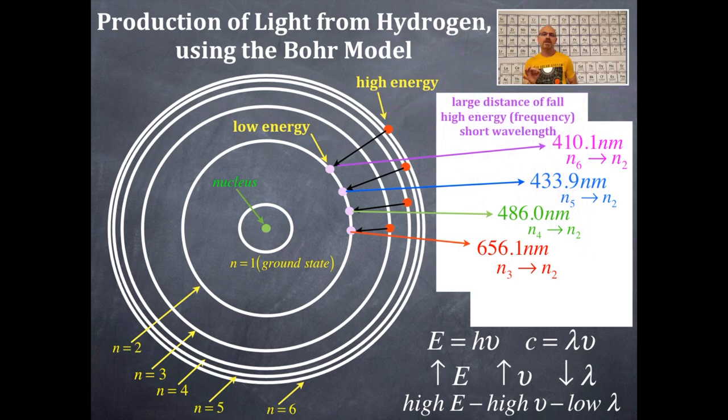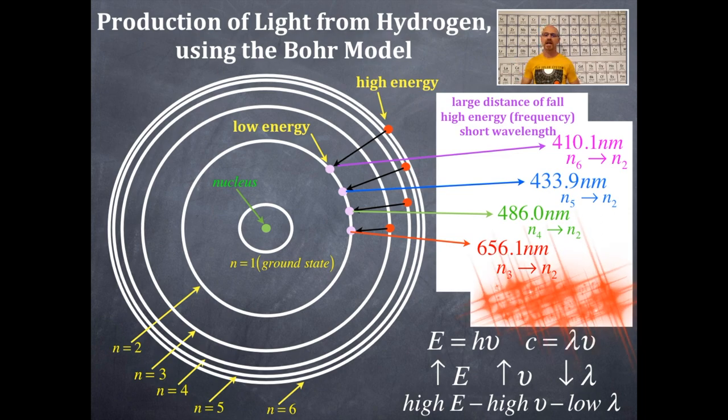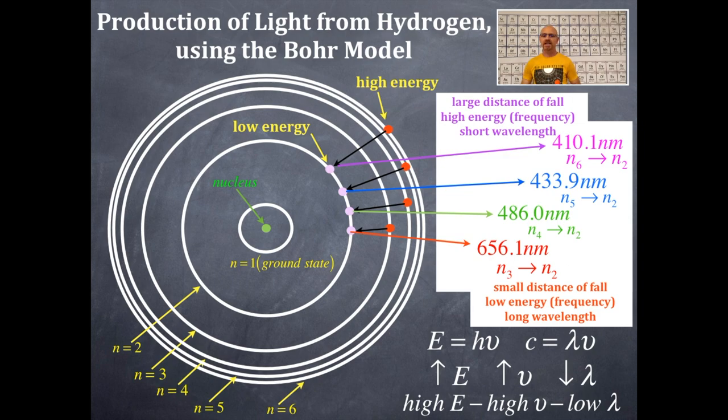If we look at this violet light, it's a large distance of fall. That's going from N equals 6 to N equals 2. Since it's a large distance of fall, it's high in energy, high in frequency, and short in wavelength. In comparison, the red wavelength of light is a short distance in fall, going from 3 to 2. That shorter distance is equated with low energy, low frequency, and long wavelength.